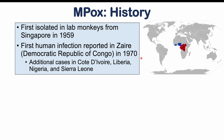There were then additional cases in Côte d'Ivoire, Liberia, Nigeria, and Sierra Leone. So some of the earliest cases started in Central Africa, and then we started seeing more on the west coast of Africa. Over the next couple of decades, cases of this virus started to increase in Central and Western Africa.